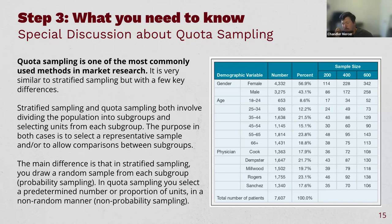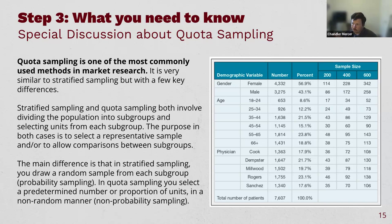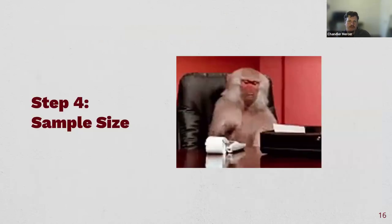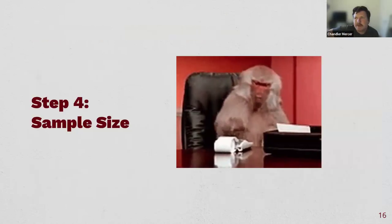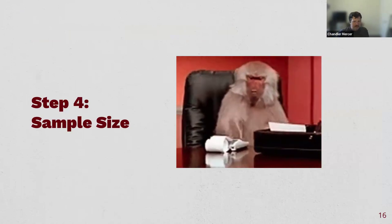If you've ever taken a survey and been told you don't qualify after the first couple of demographic questions, it's probably because you don't fit the quota group they still need. Maybe they've already got enough males from Missouri with brown hair — now they need females from Missouri. Before you can even complete the survey, they determine whether you can fit into the remaining open group.